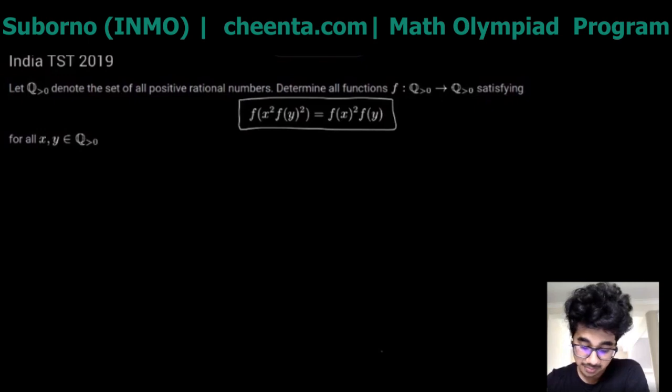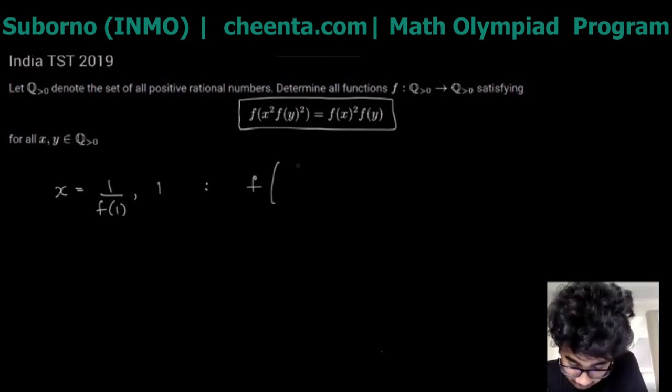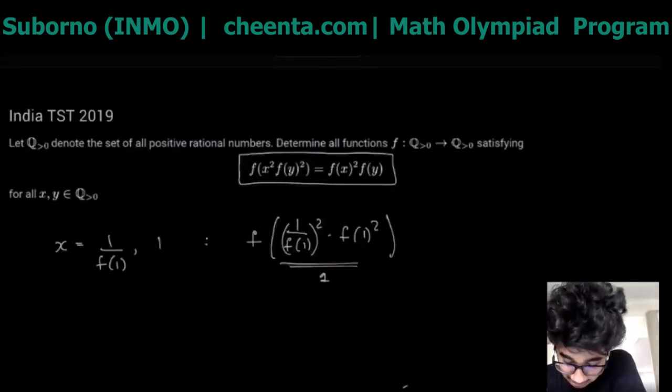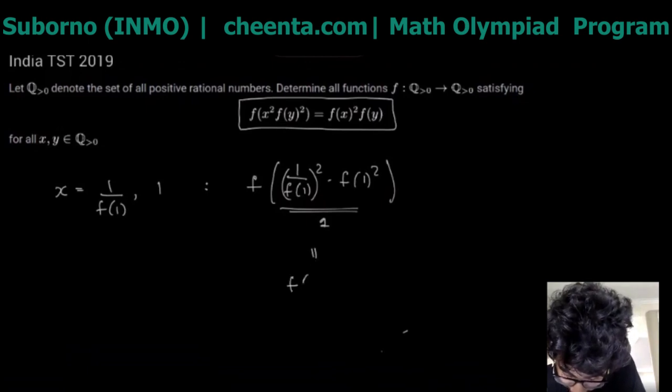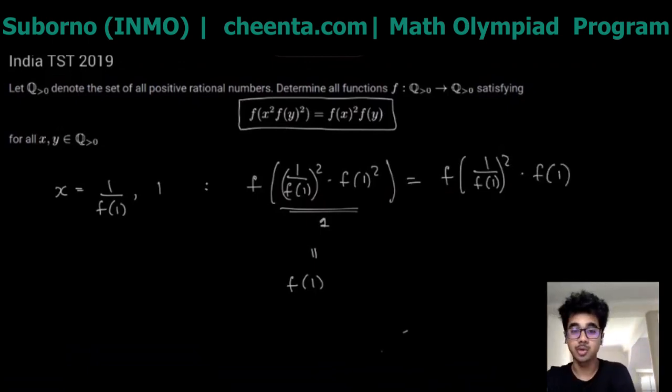In this case we can try and eliminate the ugly looking left-hand side into something simpler. Let's try and plug in these values for x and y: x = 1/f(1)^2 and y = 1. This basically just gives us 1 divided by f(1) whole square, and here we have f(1) whole square, so this is nothing but just 1. So the left-hand side in this case just becomes f(1), and the right-hand side becomes f of this thing times f(1).